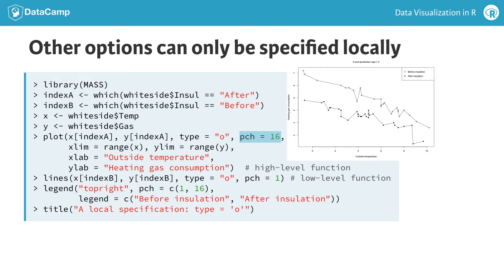An example of a strictly local graphics parameter is the type argument in the plot function, which specifies the kind of plot that will be drawn — for example, points, lines, or points overlaid on lines. Here, we see the effect of specifying type equals "o" to obtain points overlaid on lines.